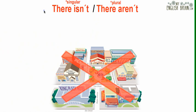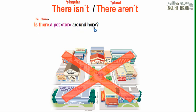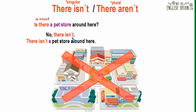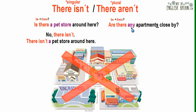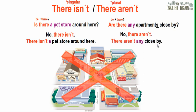Now the negative — we use 'there isn't' and 'there aren't.' For example, the question: Is there a pet store around here? The answer: No, there isn't — there isn't a pet store around here. In the plural form: Are there any apartments close by? The answer: No, there aren't — there aren't any close by. Remember, 'there isn't' for singular and 'there aren't' for plural.